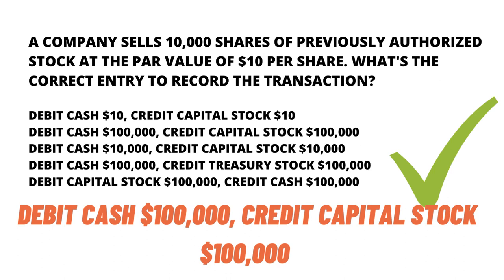The second option is the correct answer. We will look at the other options as well. Option three: debit cash $10,000, credit capital stock $10,000 — that's wrong. Option four: debit cash $100,000, credit treasury stock $100,000 — that's wrong. Option five: debit capital stock $100,000 and credit cash — that's wrong as well.